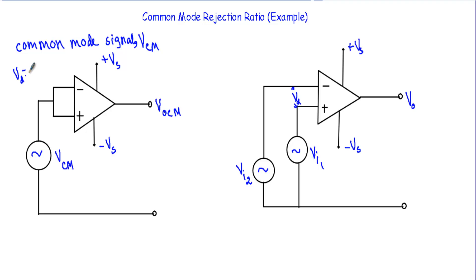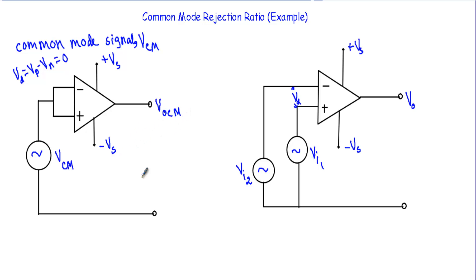When we apply the same signal to both the inverting and non-inverting terminals, the differential input voltage VD = VP minus VN should be equal to zero. Therefore there should be no output voltage at the output-to-ground terminal. But due to offset, I will get a small amount of voltage, which I will denote as VOCM — the common mode output voltage.